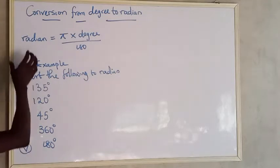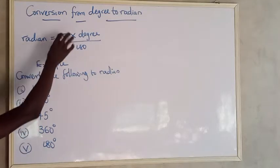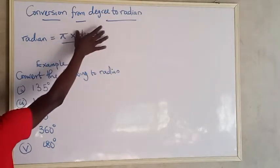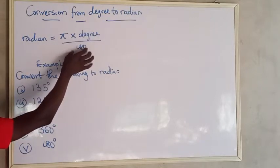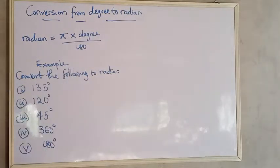So if you have to convert any degree to radian, the formula I'm going to be using is pi multiplied by the degree divided by 180. So let's see these examples.